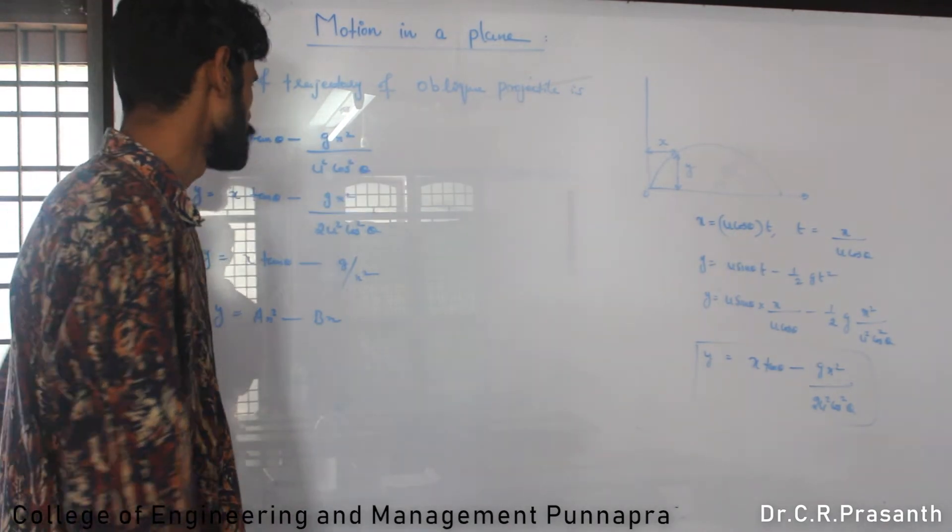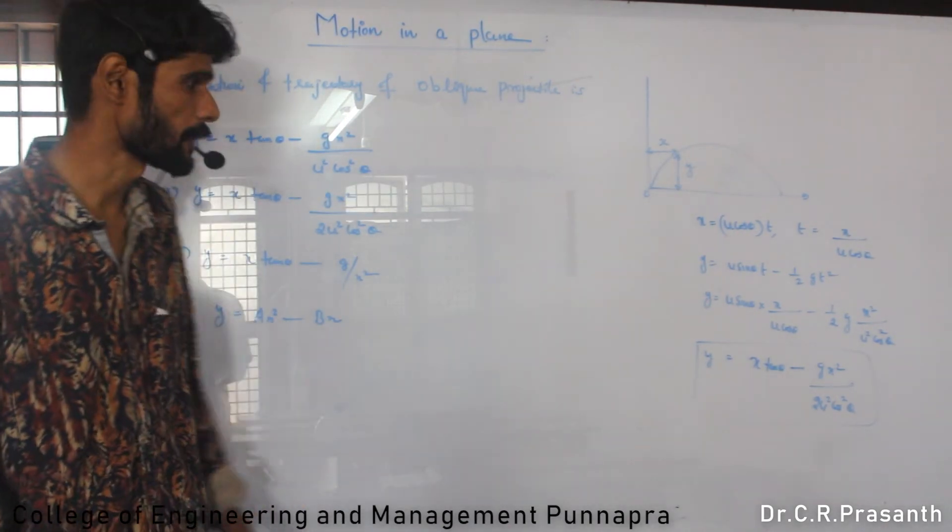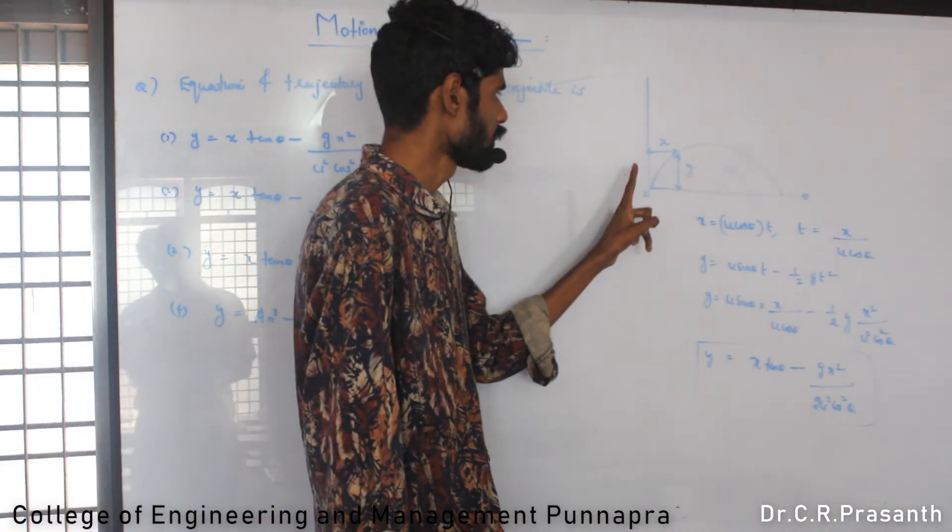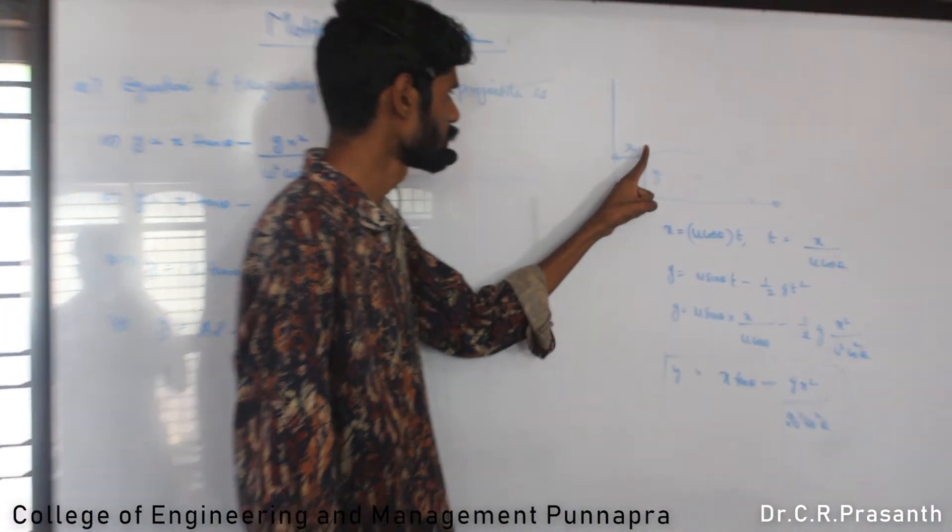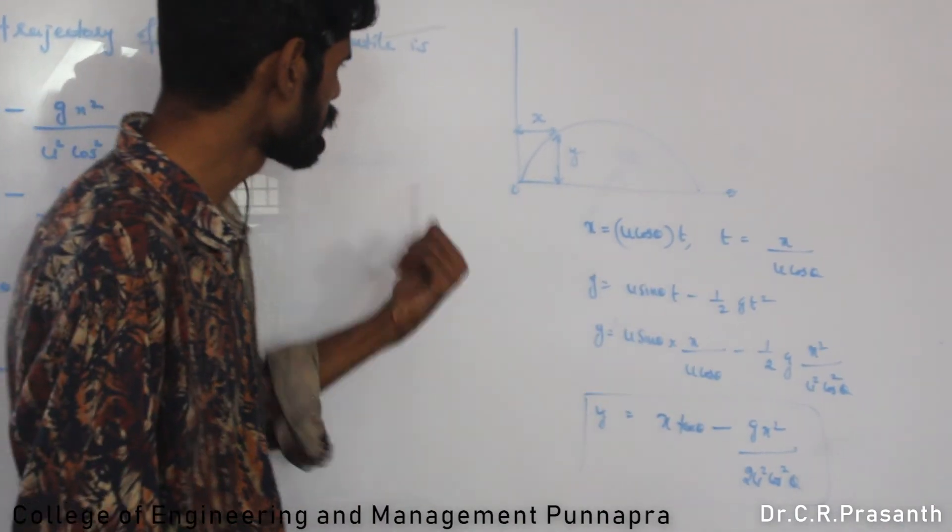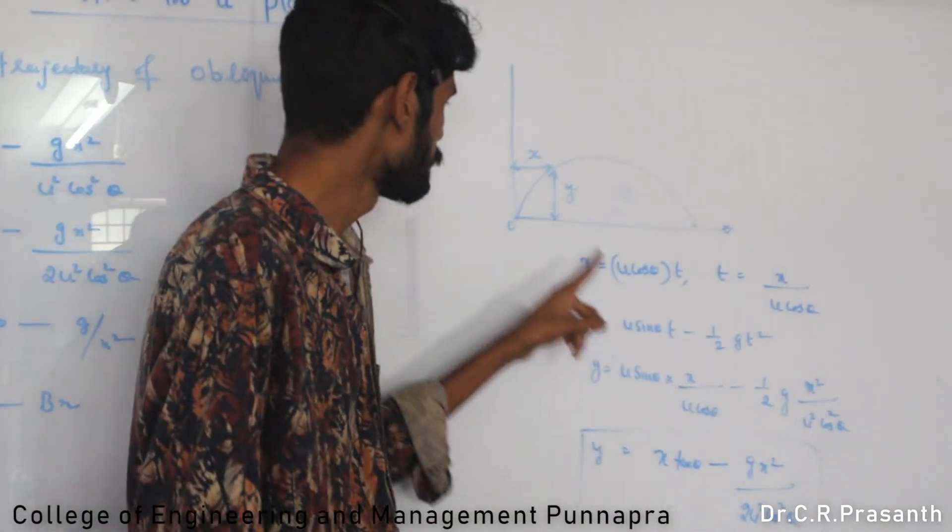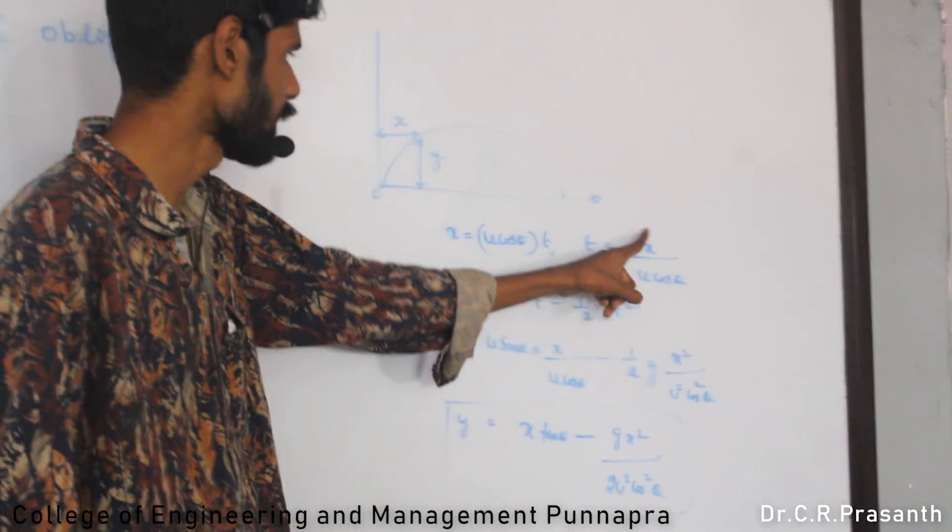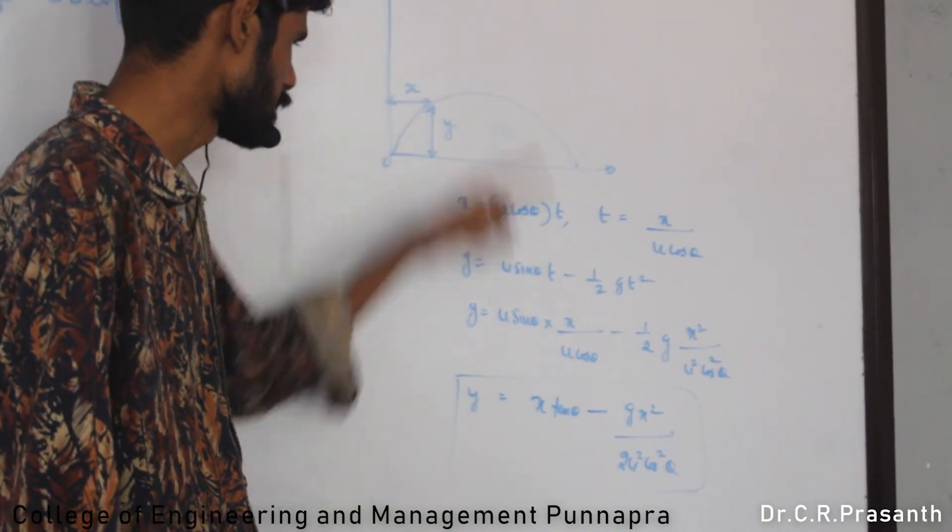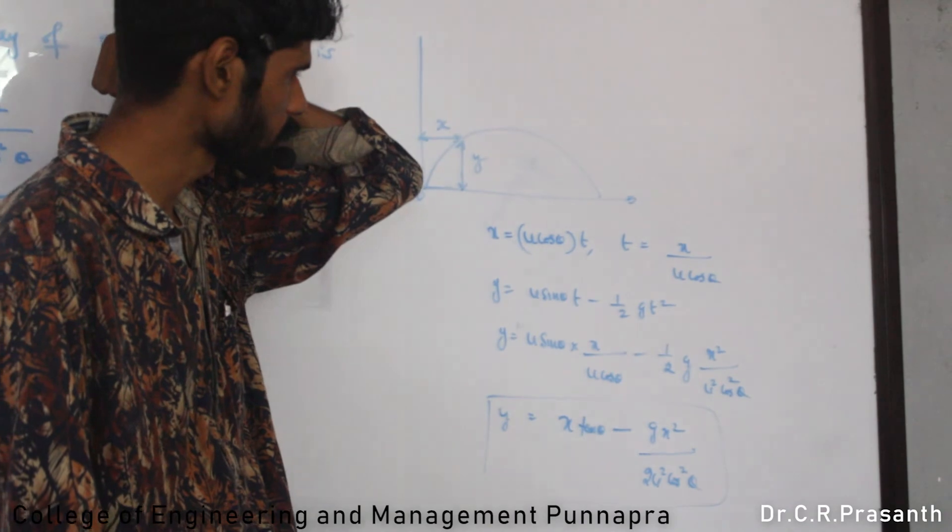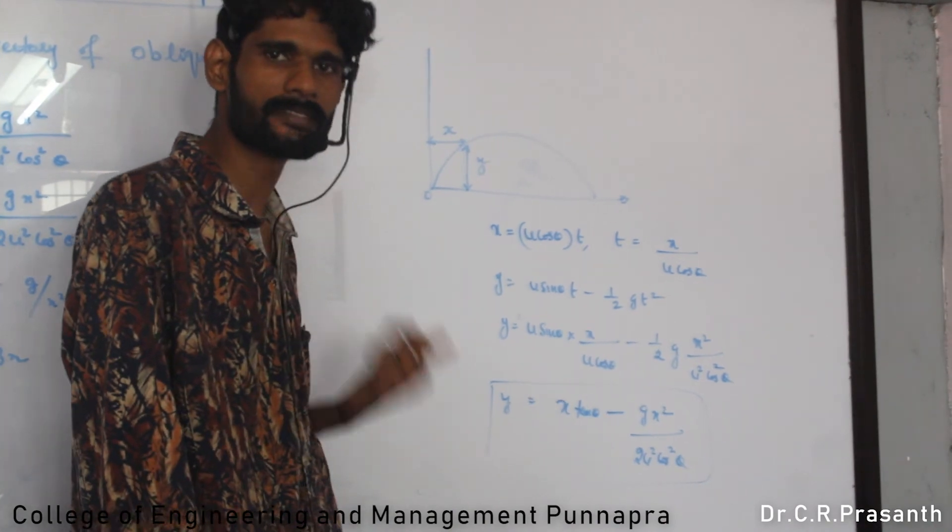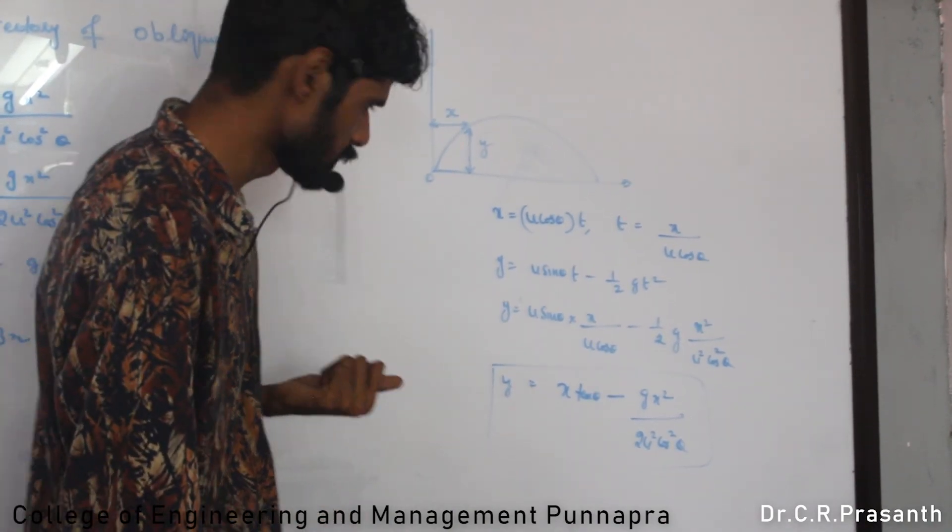Equation of trajectory of a projectile. Trajectory is the path of a projectile. X is the horizontal displacement, y is the vertical displacement. In horizontal direction, velocity is constant: u cos theta. Horizontal displacement is velocity times time: x equals u cos theta times t. So t equals x by u cos theta. In vertical direction, y is accelerated motion. There is acceleration due to gravity. The vertical component changes due to acceleration due to gravity.